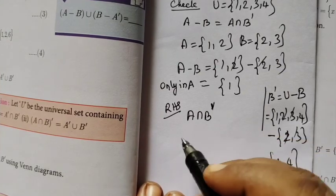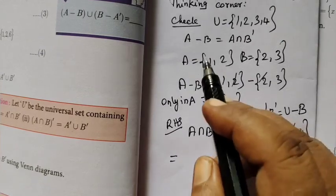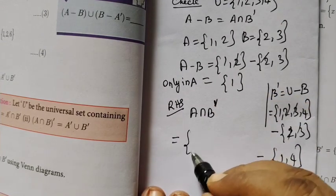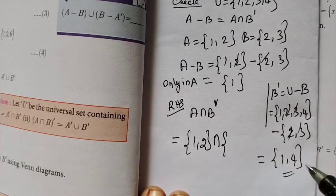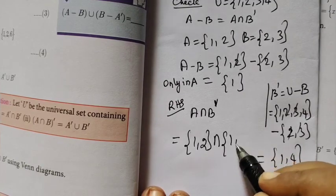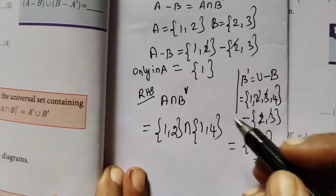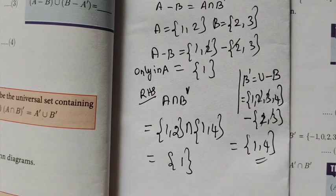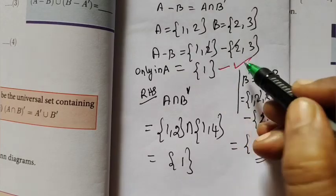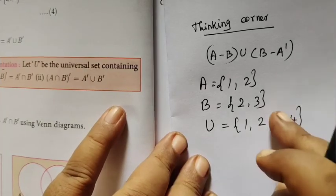Now we will write the intersection. So what is A? A equal to 1, 2. Intersection. Then B dash 1, 4. Is it correct? 2, 3, 4. 1. So in the beginning, this A, B. This is what we have done. 1.